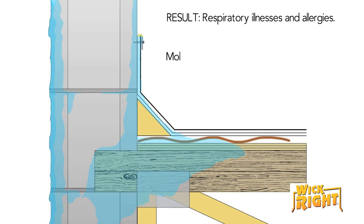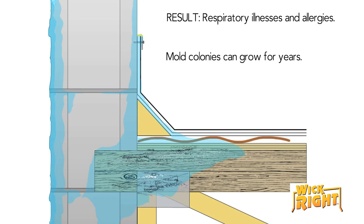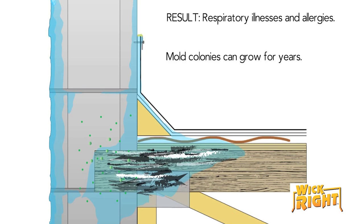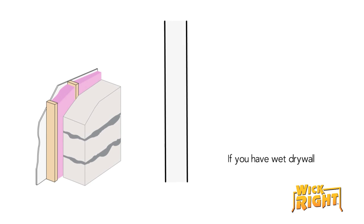Mold colonies can be forming in the wall cavity for years before you notice any mold on the face of the drywall. If the drywall on an exterior wall seems less than sturdy, gives when you push on it, or feels wet to the touch, call a home inspector immediately.